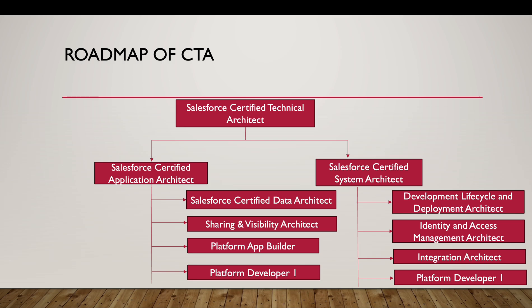I've also created a flowchart roadmap and given the list of certifications which you have to complete to be eligible to take the Salesforce Certified Technical Architect. To take this exam, you have to be a Salesforce Certified Application Architect and a Salesforce Certified System Architect. Application Architect is not a standalone exam — when you complete four certifications, you automatically become the Application Architect: Data Architect, Sharing and Visibility, Platform App Builder, and Platform Developer 1. To become a System Architect, you need to complete Development Lifecycle and Deployment Architect, Identity and Access Management Architect, Integration Architect, and Platform Developer 1. Once you have both these certifications, you are eligible for the Salesforce Certified Technical Architect, which has two steps as shown in the article.